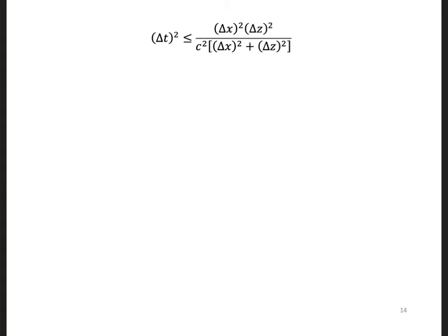We can simplify the right side of this expression by dividing both the numerator and the denominator by delta x squared and delta z squared.